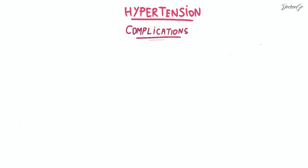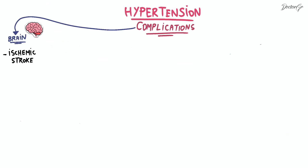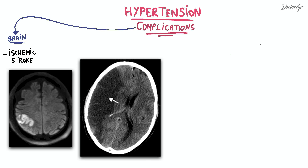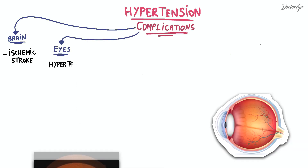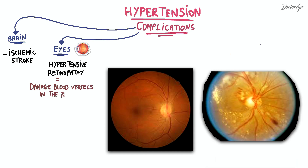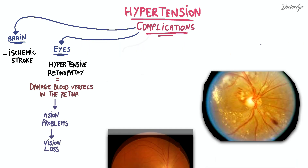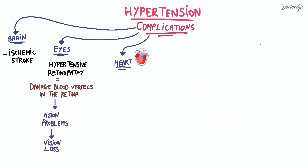If left uncontrolled, hypertension can lead to various complications affecting different organs. In the brain, it increases the risk of cerebrovascular disease, with ischemic strokes being a significant concern. In the eyes, hypertensive retinopathy is characterized by damage to the blood vessels in the retina, leading to vision problems and, in severe cases, vision loss.